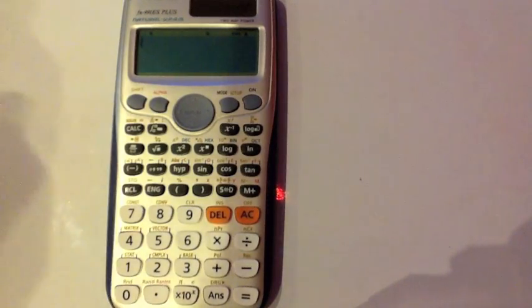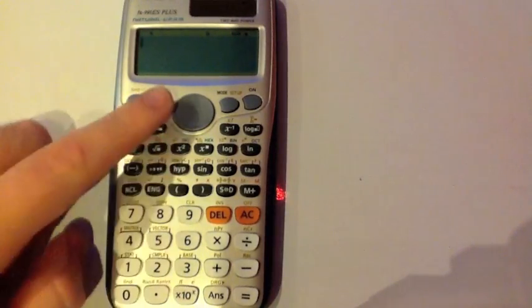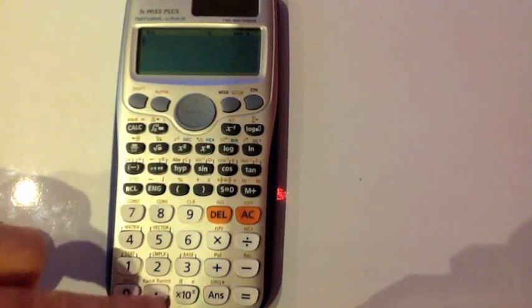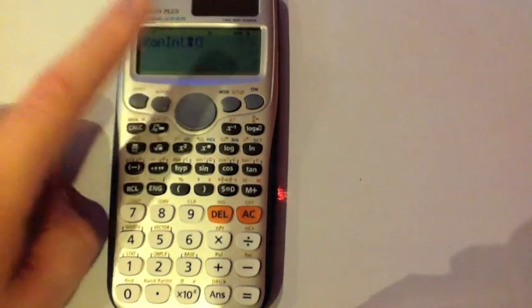To choose a random integer, first of all press the alpha. Because it's in red, you're going to press alpha at the top, and then you're going to press the decimal point button. And then it'll come up with RAN INT, random integer number.